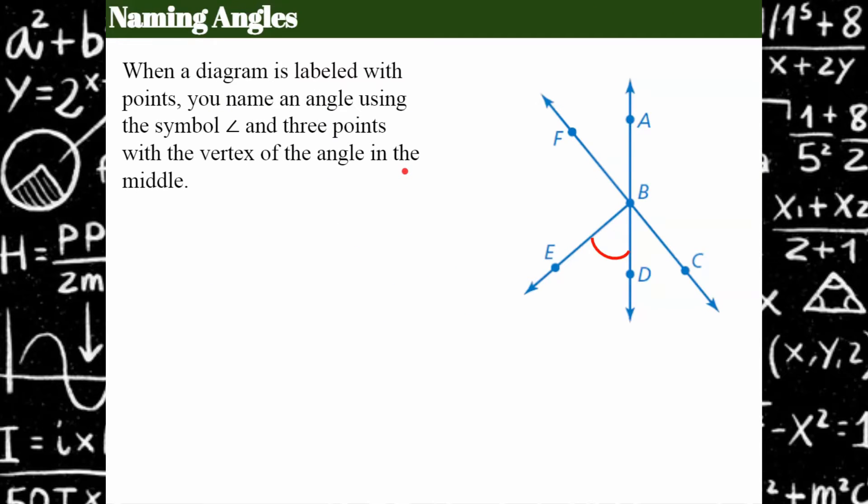So when we go to name an angle, I'm talking about this angle right here. So this red little arc is saying it's referring to this angle. So typically, when you're looking at a diagram, what they're asking you to identify or classify or find the measure of, it's usually got a little arc with a different color in there.